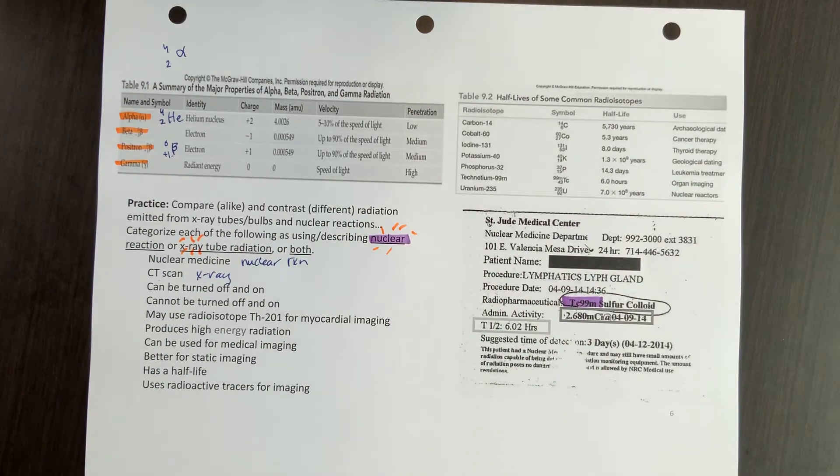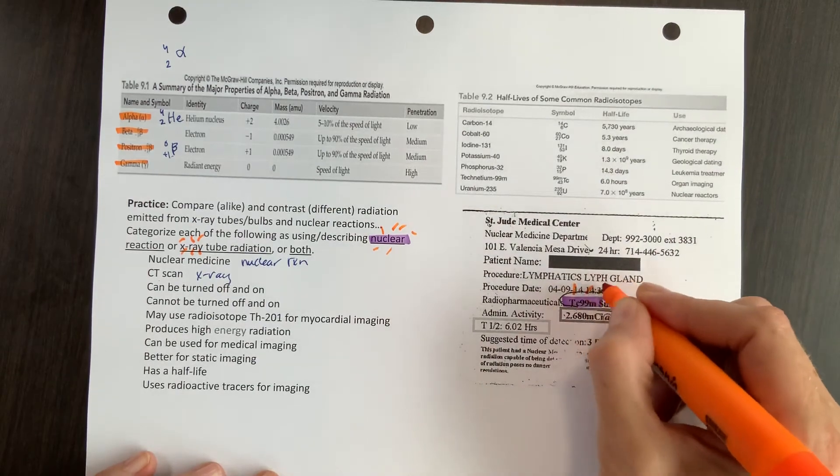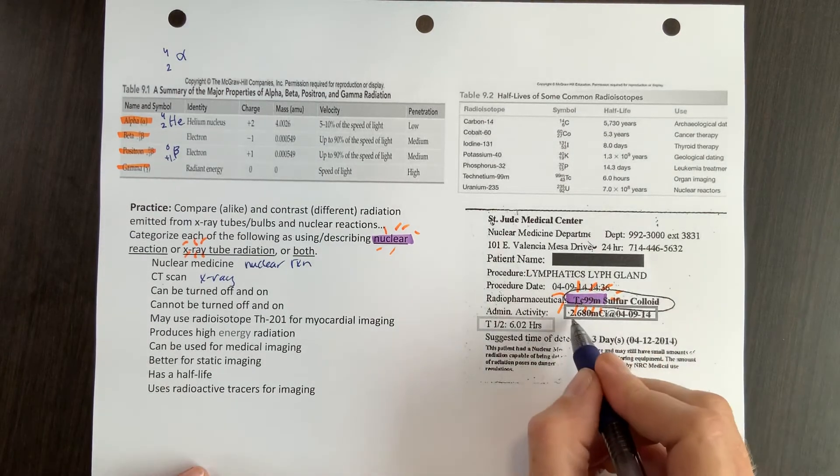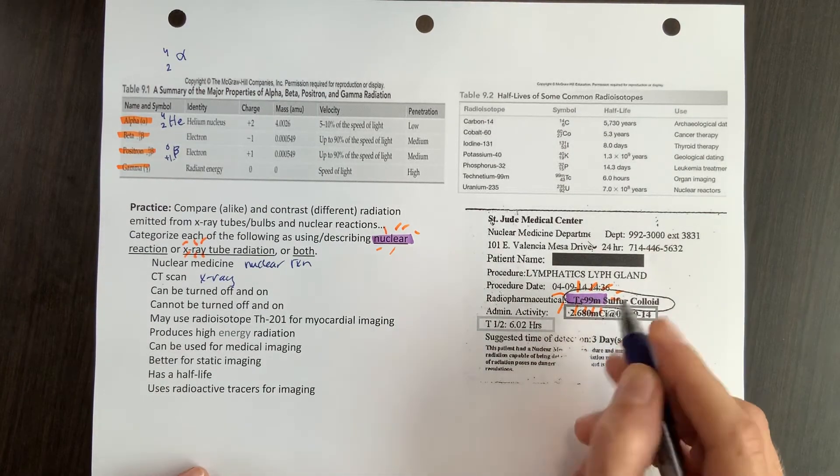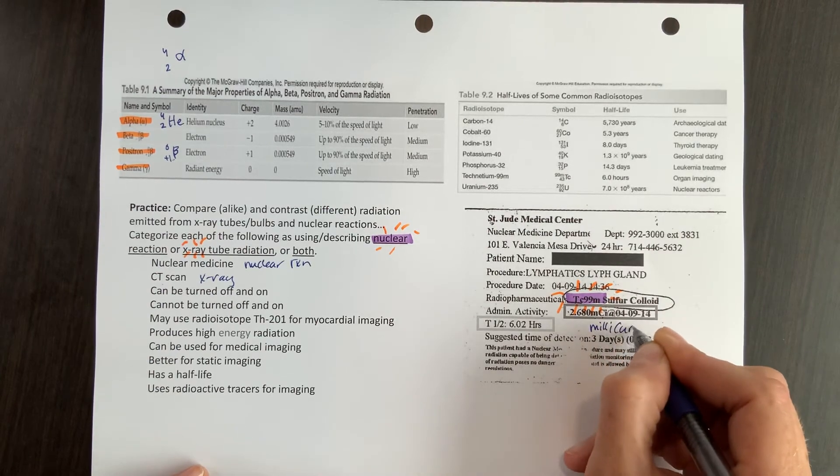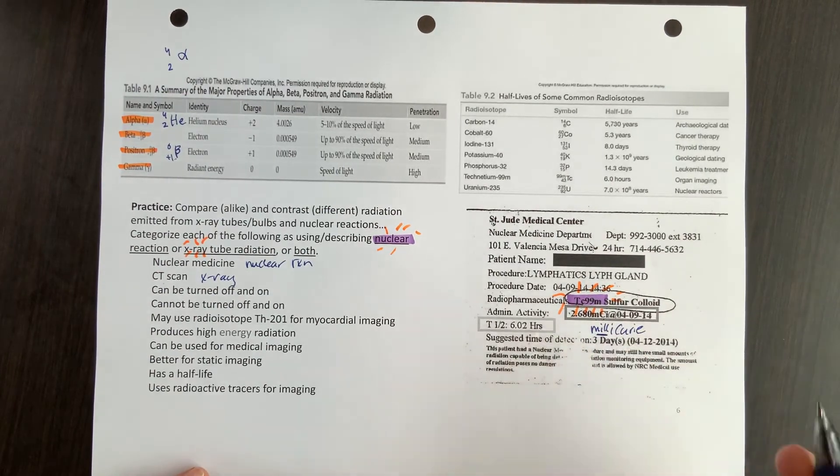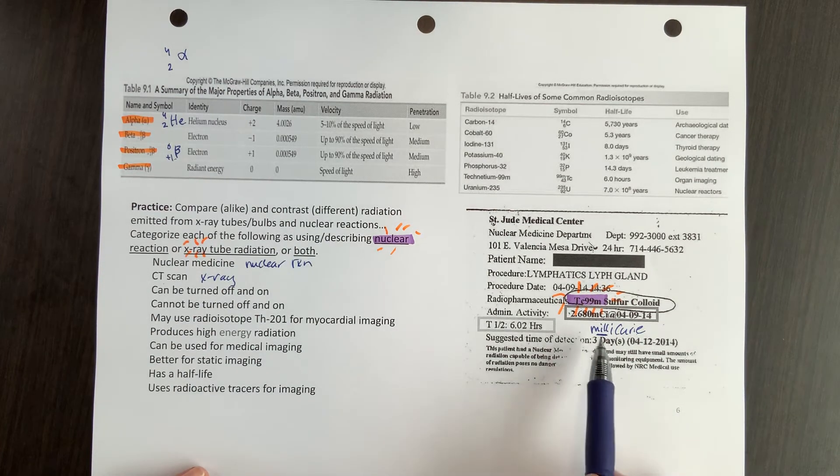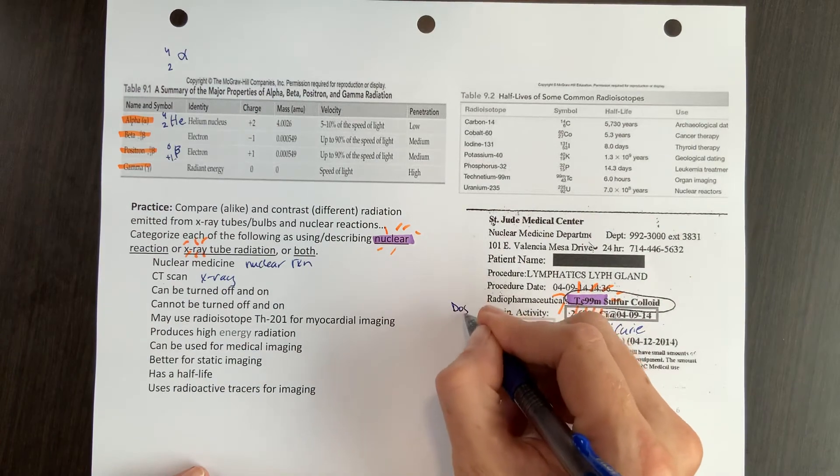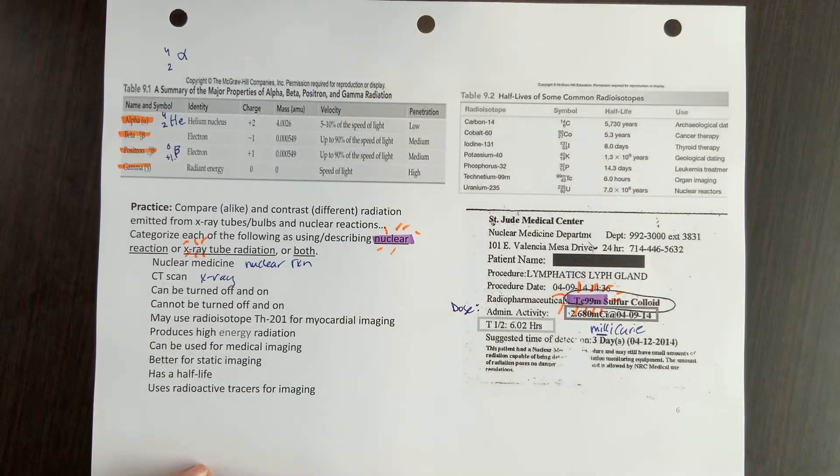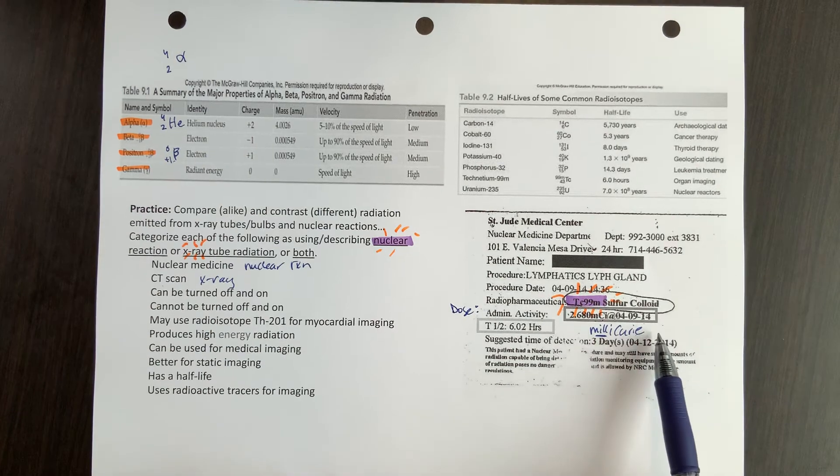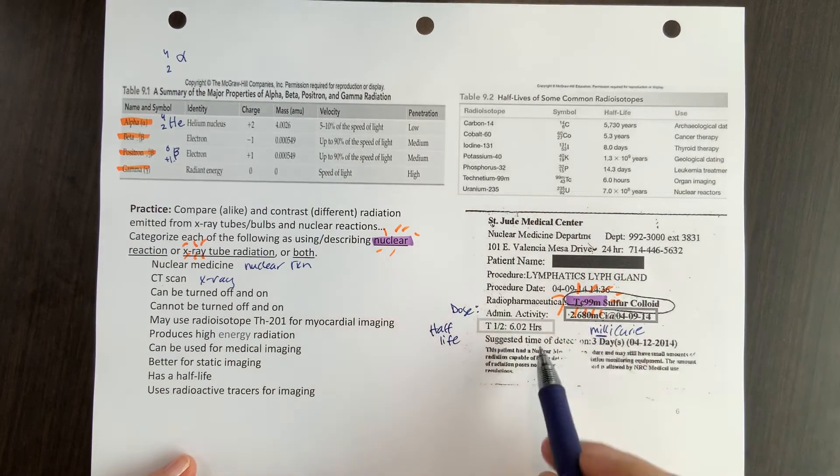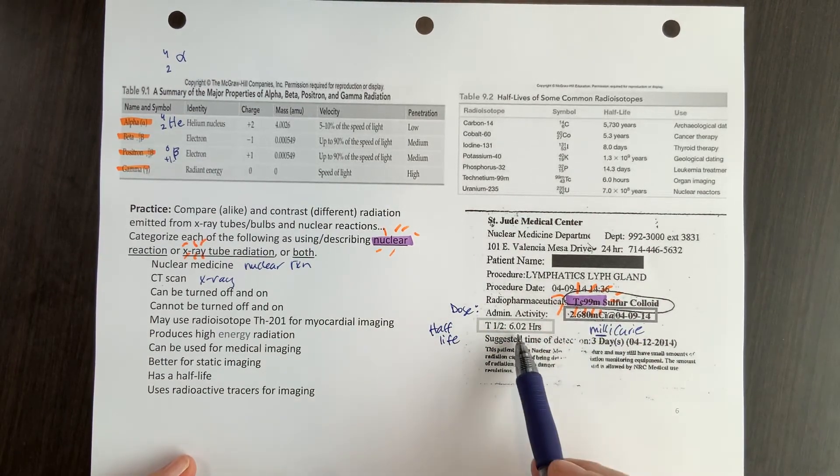And it is going to now give off radiation for a while. Here is 2.68 millicuries. So this unit is a new one, but don't let it throw you. It's milli, just like millimeters or milliliters. And then curie is what we're using instead of grams or meters or whatever. So this is the dose that they gave her on that date at that time. So this is the millicuries. And then T1 half, we've seen that. That is our half-life. So the half-life of this technetium isotope is 6.02 hours.